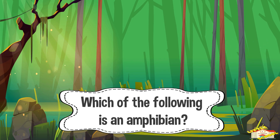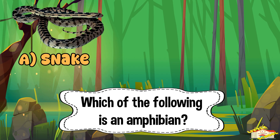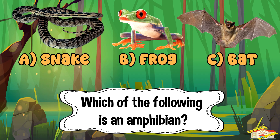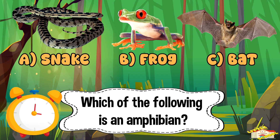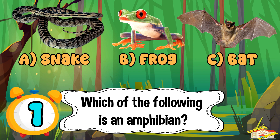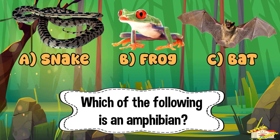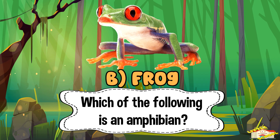Question 3: Which of the following is an amphibian? A) Snake, B) Frog, or C) Bat? Five, four, three, two, one. The answer is B — Frog.